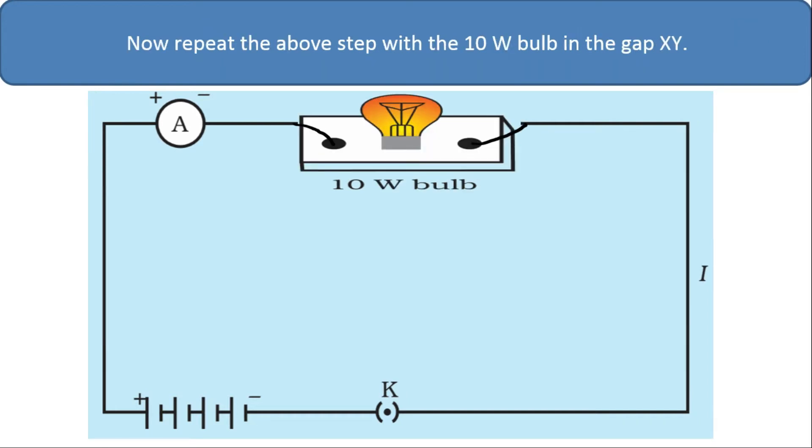Now repeat the above step with the 10 watt bulb in the XY gap. This time you have to connect 10 watt bulb in the place of XY which was the gap we had left before. Again switch on the key.